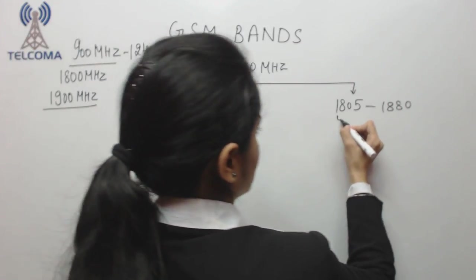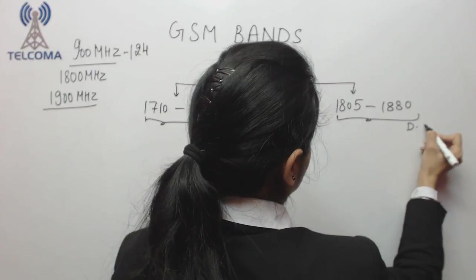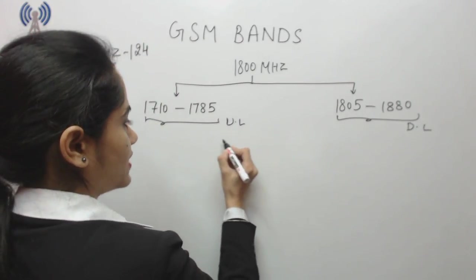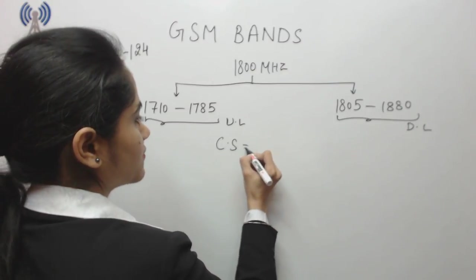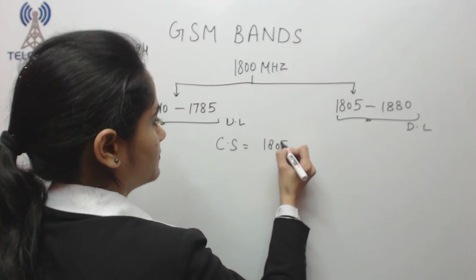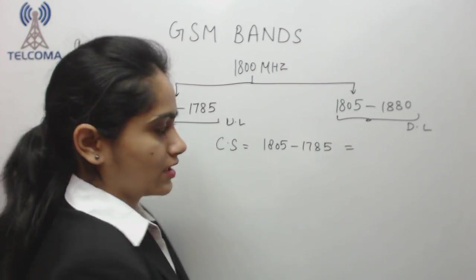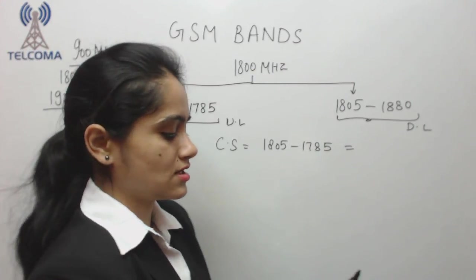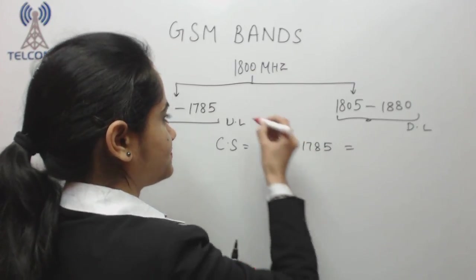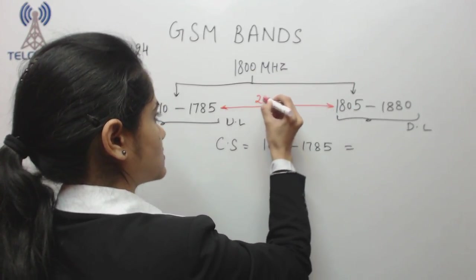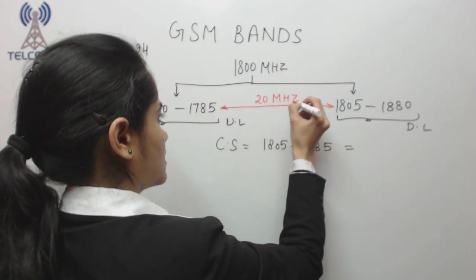Now we need to calculate the total spacing. We have channel spacing which equals 1805 minus 1785. This comes to 20 megahertz, so this 20 megahertz will be my channel spacing.